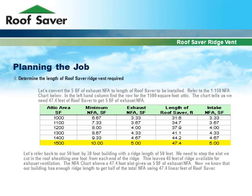Let's convert the 5 square feet of exhaust net free area to the length of Roof Saver to be installed. Refer to the 1 to 150 net free area chart. Find the row for the 1,500 square foot attic; the chart tells us we need 47.4 feet of Roof Saver to get 5 square feet of exhaust NFA. For our 50 foot by 30 foot building with a 50 foot ridge, we stop the slot one foot from each end, leaving 48 feet of ridge available. The NFA chart confirms that a 47.4 foot slot gives us 5 square feet of exhaust NFA, so our building has enough ridge length.